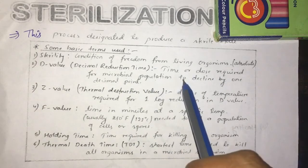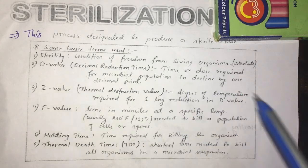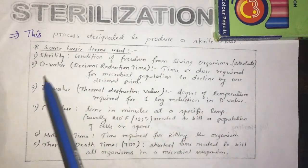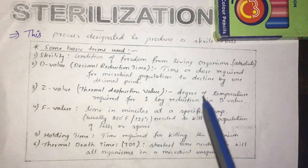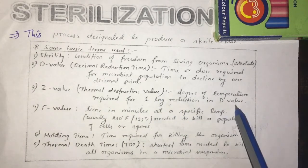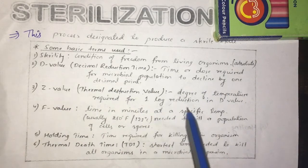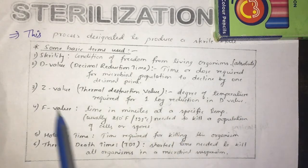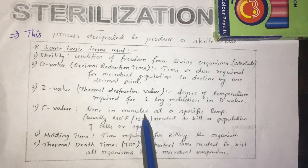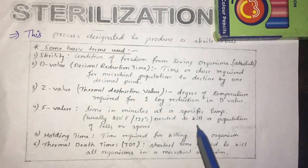Now talk about Z value — the degree of temperature required for one log reduction in D value. If it reduces one log value, that is the Z value. Now talk about F value — the time in minutes at a specific temperature and pressure, usually 250°F or 121°C, needed to kill a population of cells or spores.